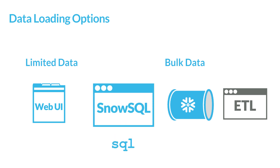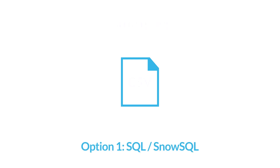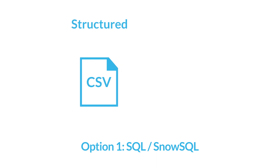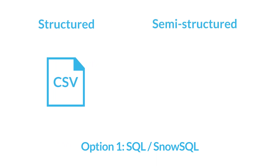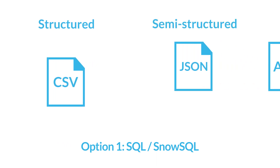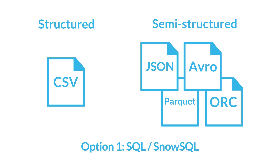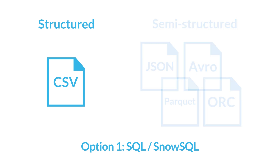This video focuses on SQL, but we will touch on the other three methods at the end. Using SQL, you can bulk load data from any delimited plain text files such as comma-delimited CSV files. You can also bulk load semi-structured data from JSON, Avro, Parquet, or ORC files. However, this video focuses on loading from CSV files.